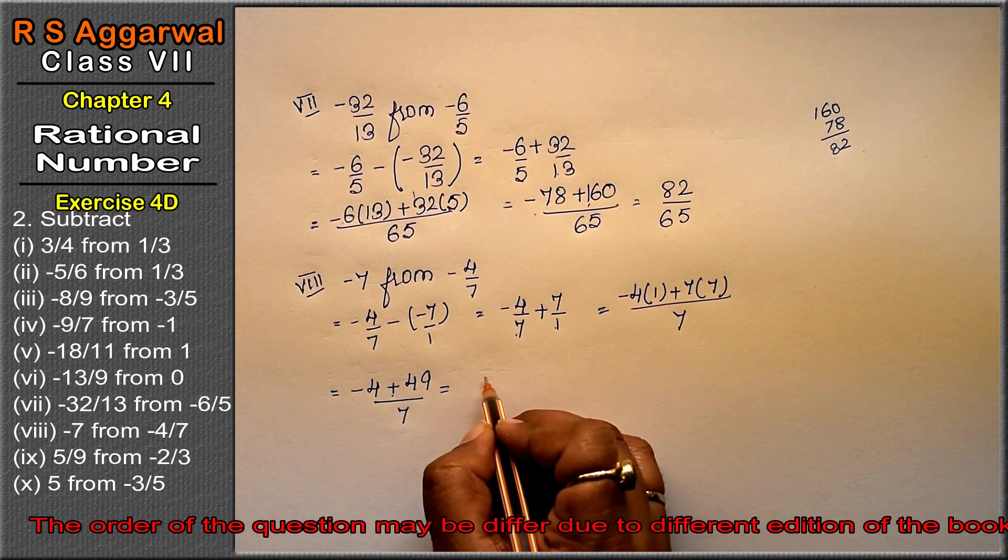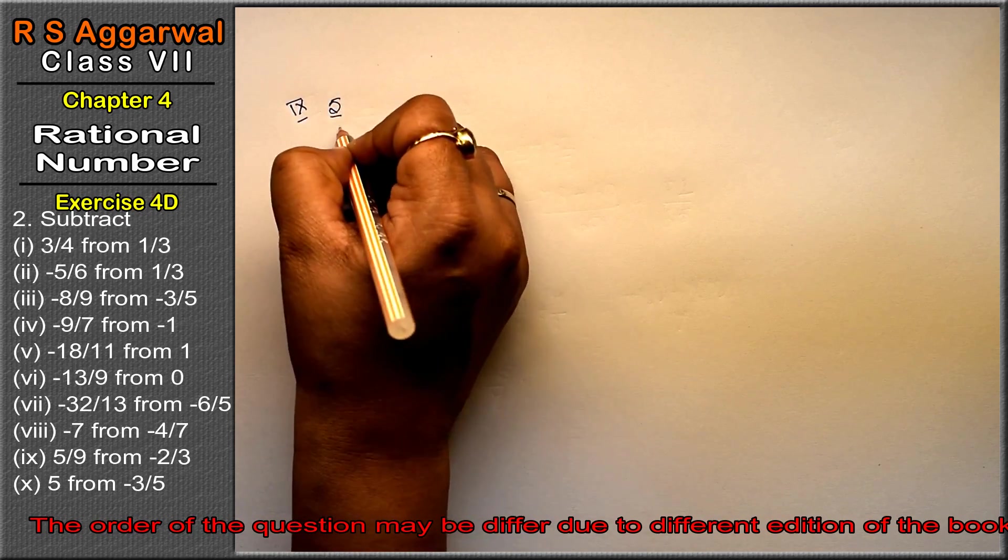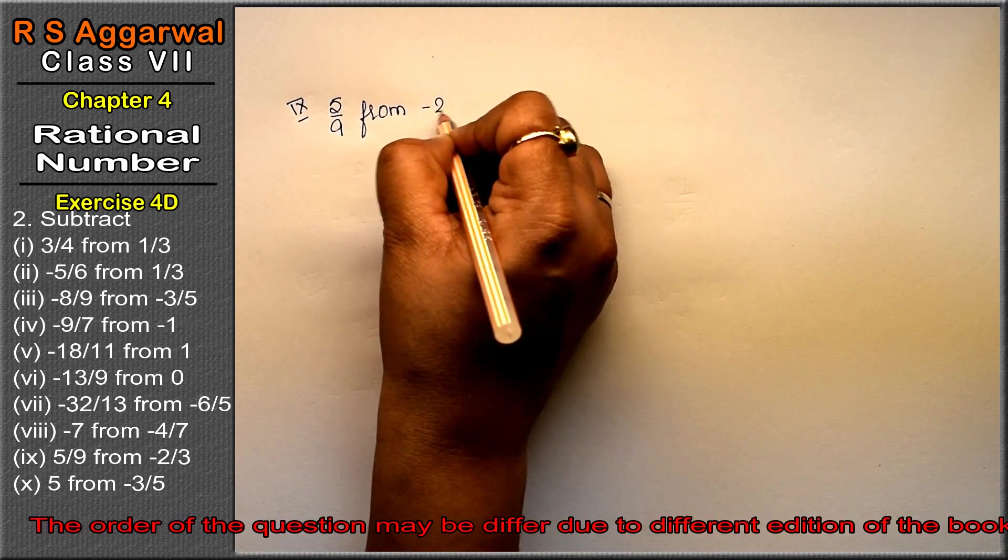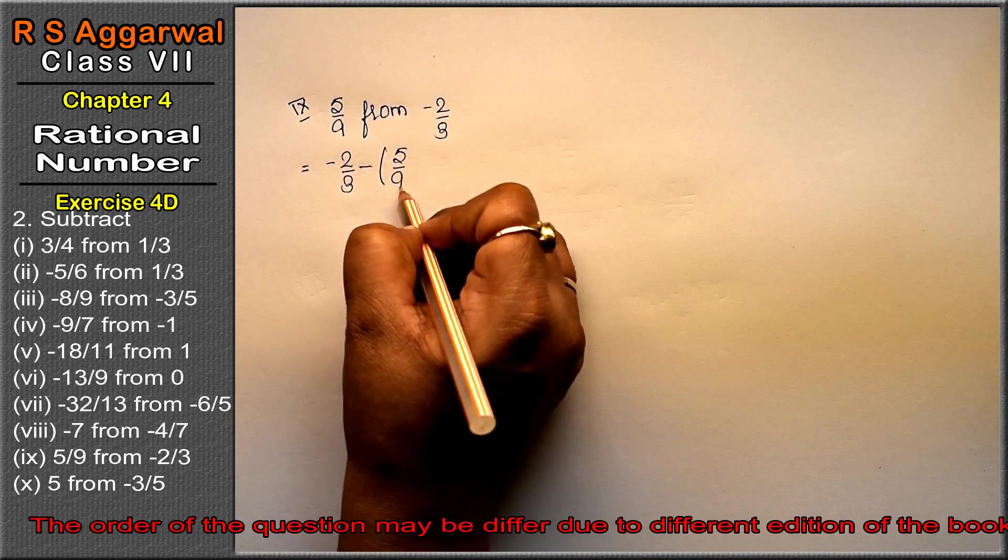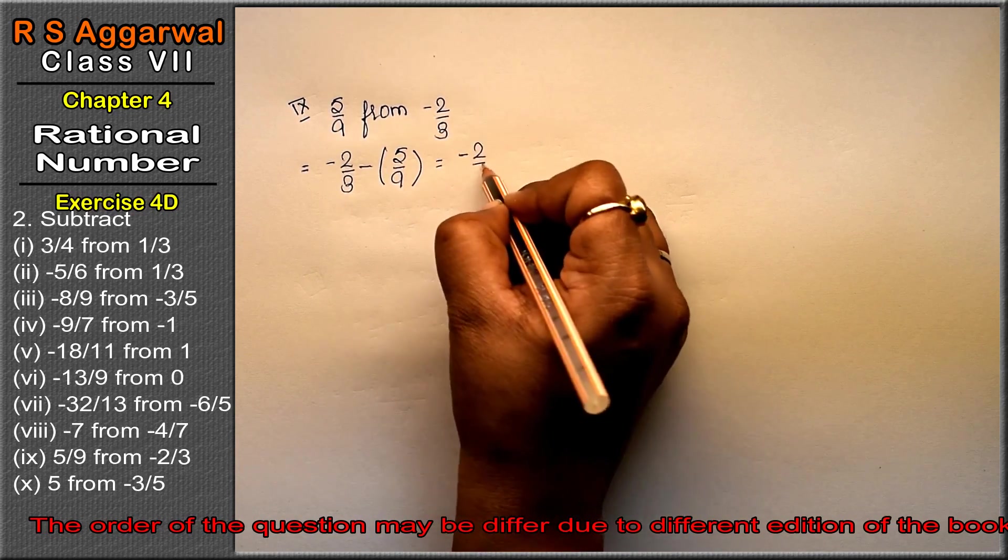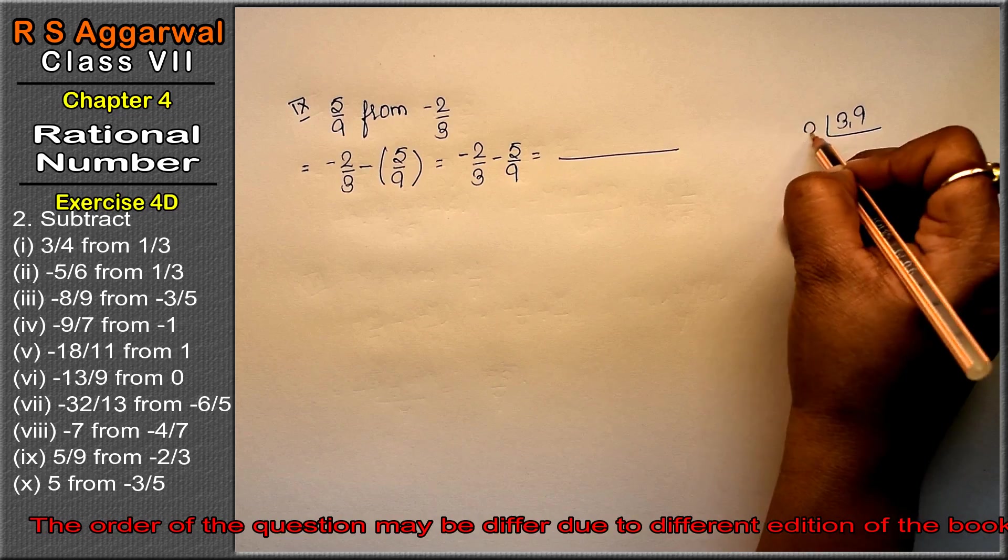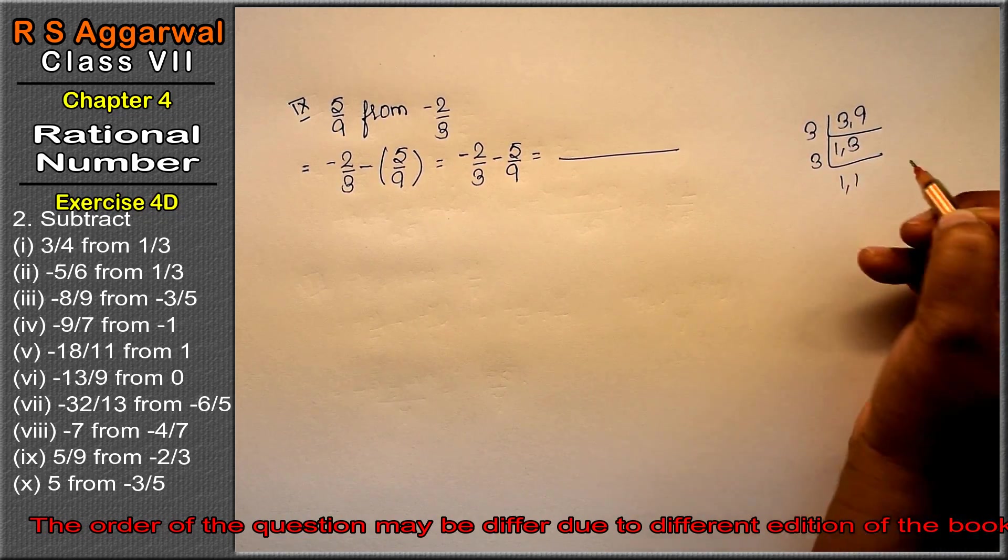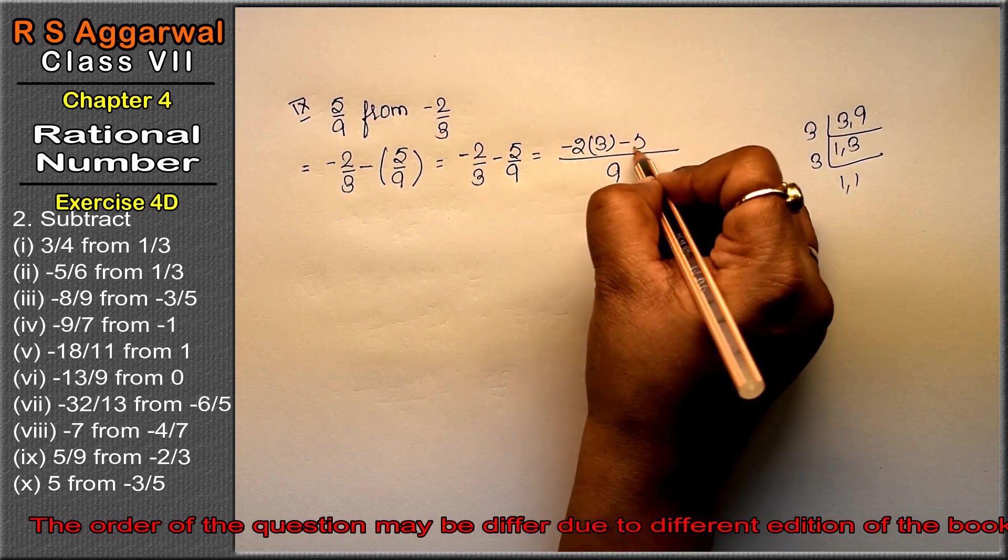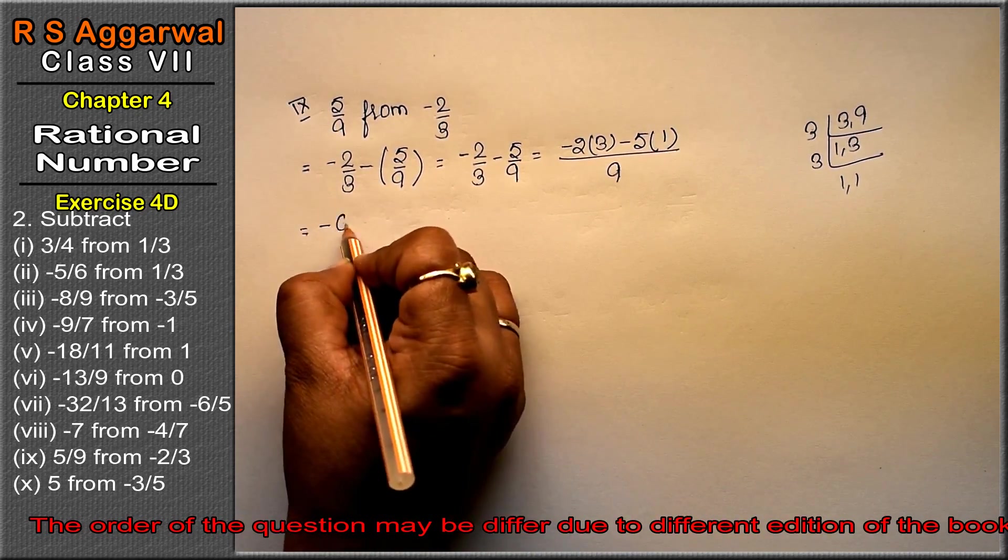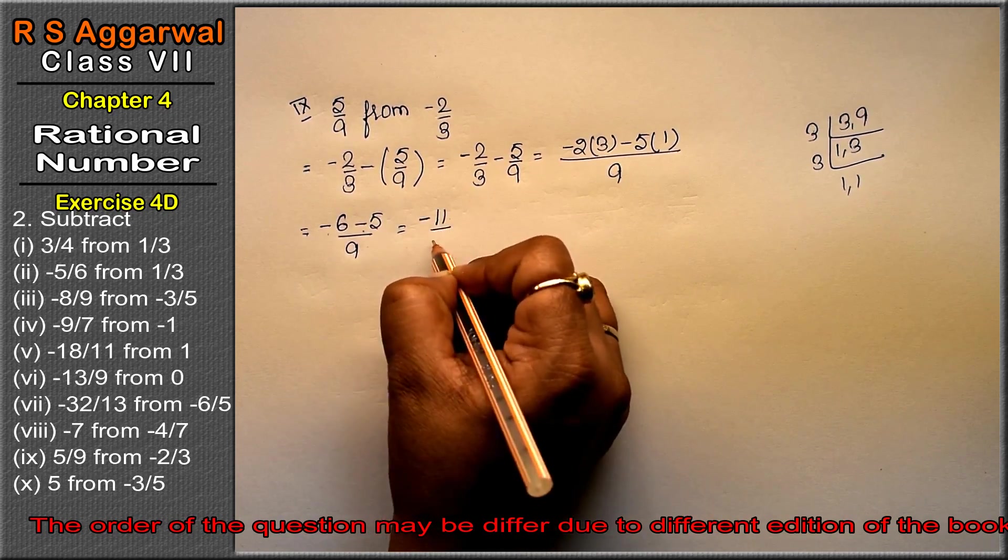Ninth part: subtract 5 upon 9 from minus 2 upon 3. So minus 2 upon 3 minus 5 upon 9. LCM of 3 and 9 is 9. Minus 2 times 3 is minus 6, minus 5 is minus 11 upon 9. Both same signs, add: minus 11 upon 9 is the answer.